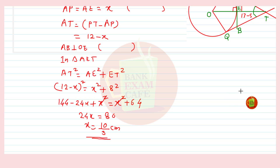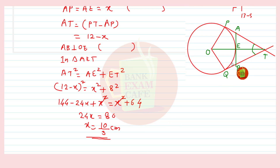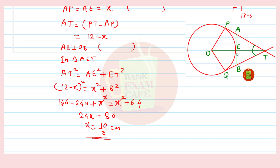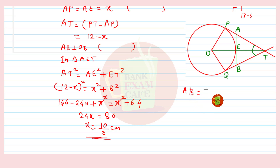We need to find AB. Since AE = 10/3 cm and AB = AE + EB, and by symmetry EB = AE = 10/3 cm, we get AB = 10/3 + 10/3 = 20/3 cm. Therefore AB = 20/3 centimeters.